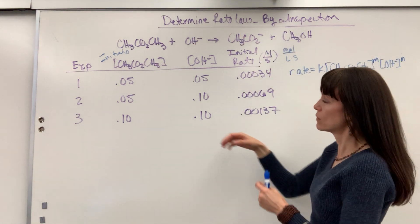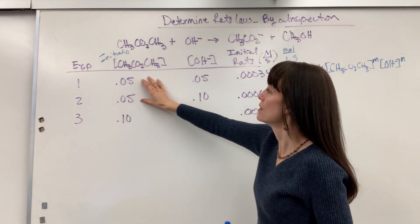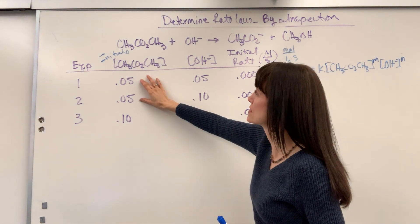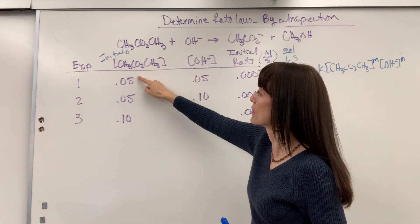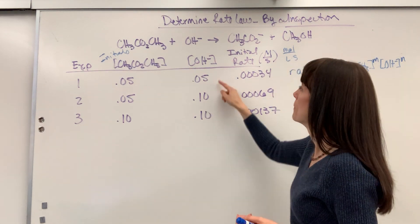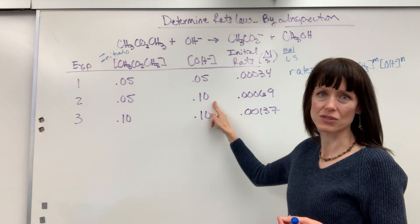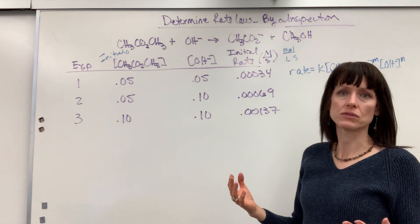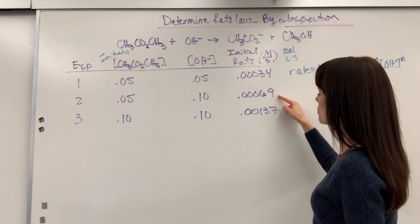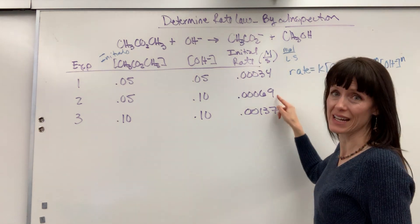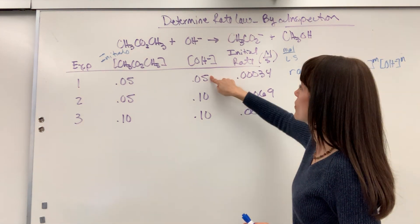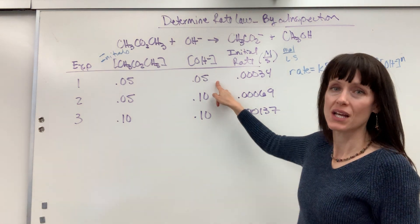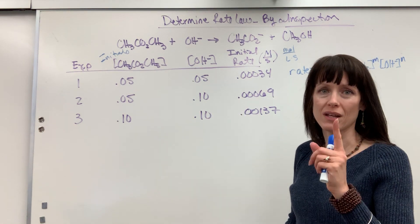So here's what I'm going to do. I'm going to look at trials one and two. I can tell that the chemists, great job, they're setting this up for us. They're holding the concentration of the methyl acetate constant. But what did they do to the hydroxide concentration? They doubled it. So if you look at the rate, check it out, it went from 0.00034 to 0.00069—it doubled. So if when you double hydroxide, it doubles the reaction, it means that the hydroxide must be an order of one. It must be first order.